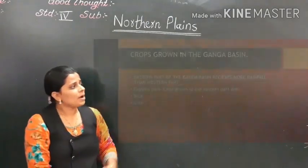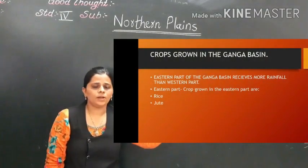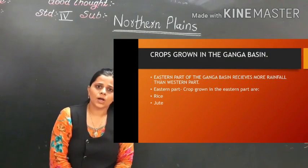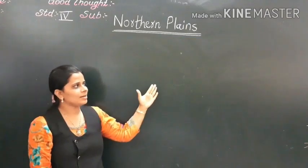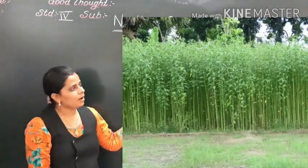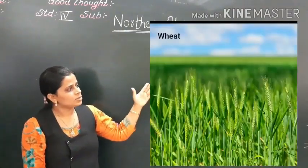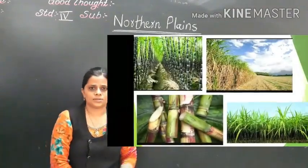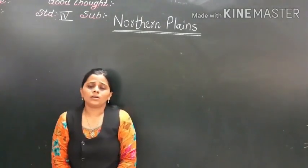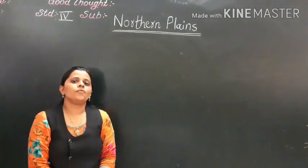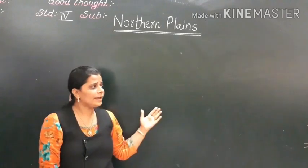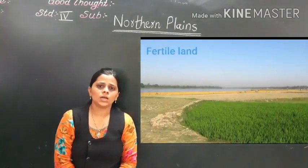The eastern part of the Ganga receives more rainfall compared to the west. The crops grown in the eastern part are rice and jute, while in the western part, rice, wheat, and sugarcane are grown. The Ganga is also known as the food basket of India because of its fertile land, which is ideal for growing crops.